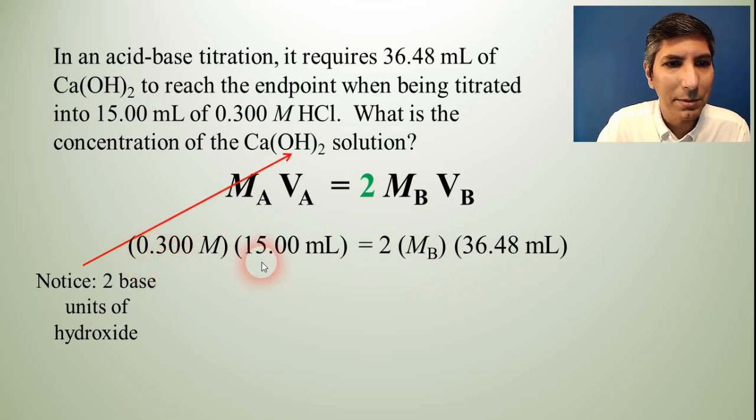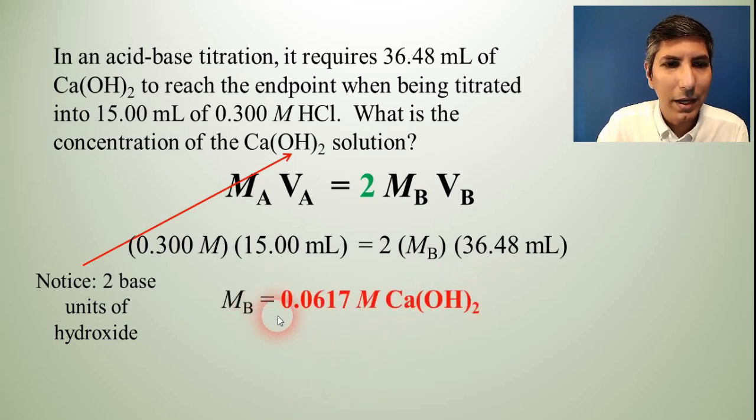Divide by 36.48. And you'll find that the answer is M sub B equals 0.0617 molar calcium hydroxide. So that's how you use the titration equation.